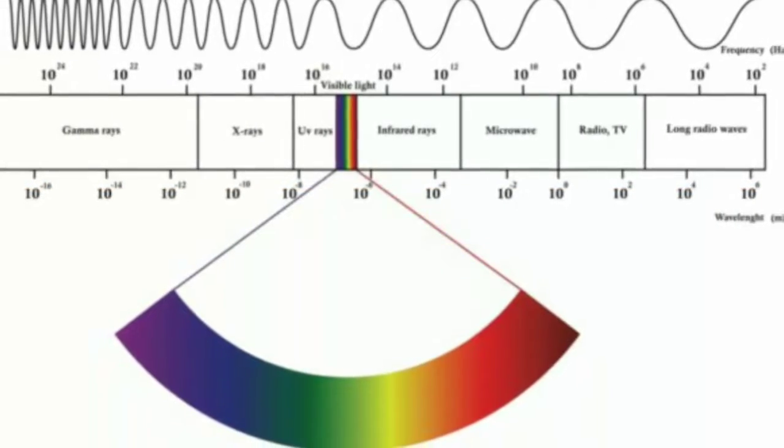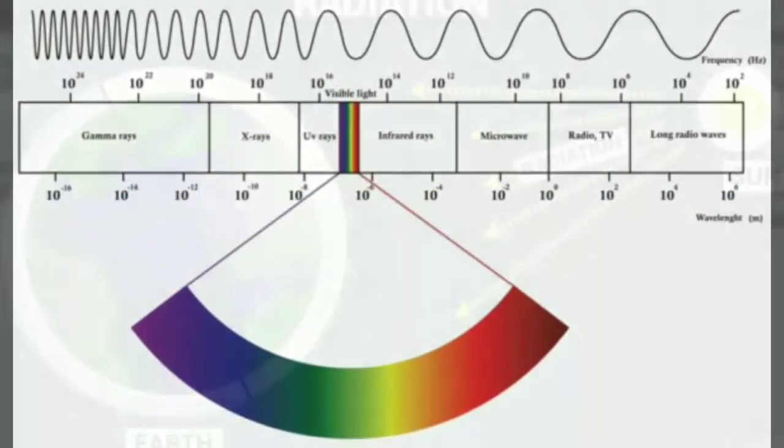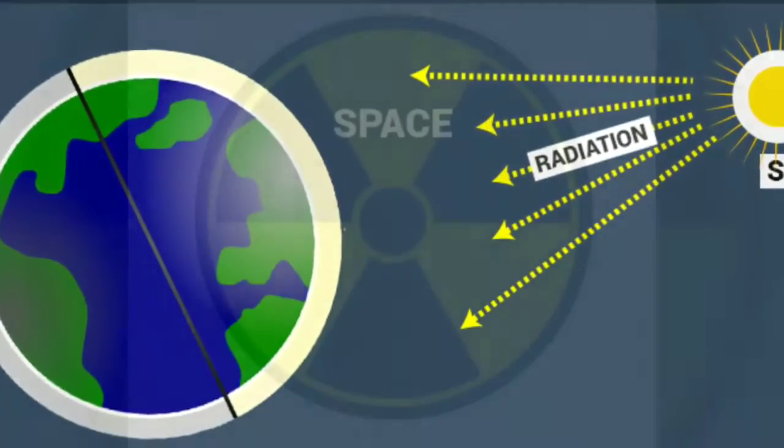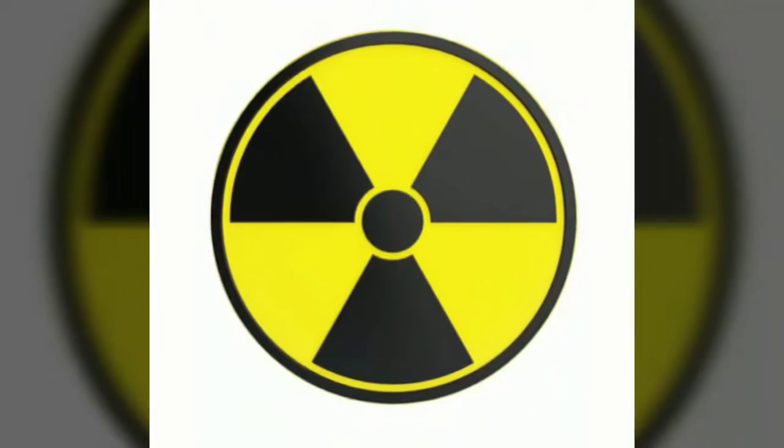The waves of longer wavelength in UV-visible light, infrared and microwave frequencies cannot break bonds but can cause vibrations in the bonds which are sensed as heat.